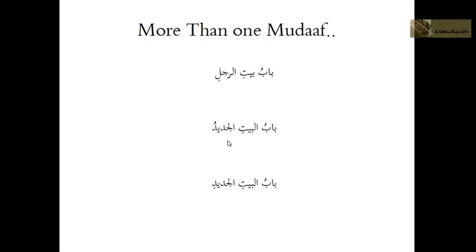What if you bring in a Sifah into this structure? For example, Baabu Bayti al-Jadeed — how do we know whether 'new' describes 'Bayt' or 'Baab'? Remember, Sifah must correspond in four things including I'rab. 'Jadeed' with a dammah matches 'Baab' which also has a dammah — so it means 'the new door of the house.' But 'Jadeed' with a kasrah would match 'Bayt,' meaning 'the door of the new house.'